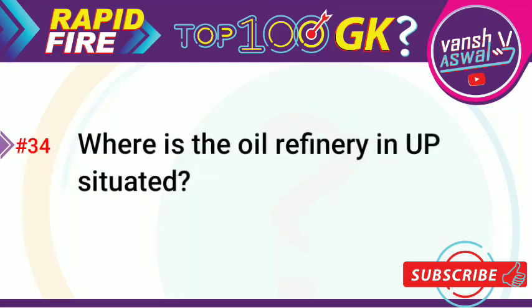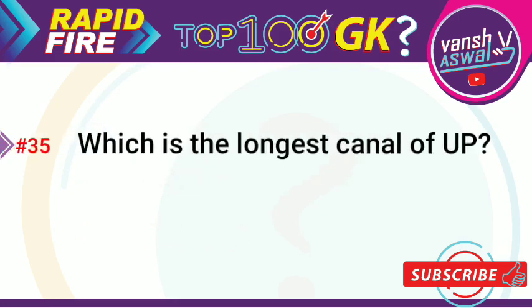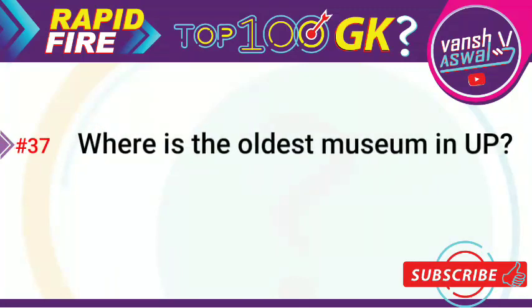Question 34: Where is the oil refinery in UP situated? Answer is Mathura. Question 35: Which is the longest canal of UP? Answer is Sharda Canal. Question 36: In which city is the Sulhkul festival, the symbol of Hindu-Muslim unity, organized? The answer is Agra. Question 37: Where is the oldest museum in UP? Answer is Lucknow.